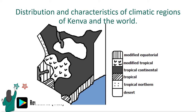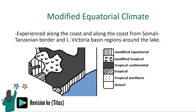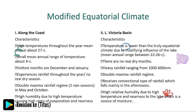You can also consider reviewing your textbook for the same diagram. The modified equatorial climate is experienced along the coast — from the Somalia-Tanzania border — and in the Lake Victoria basin regions around the lake. Consider pausing the video to look at the characteristics of both areas.